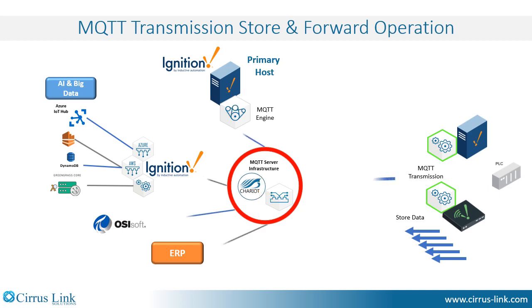Once communications to the primary host is restored, first the current live data is transmitted to restore a live view of the system, and then at a throttled rate the time-stamped stored data is published and flagged as historic. MQTT Engine knows to send this information directly to the data historian and backfill all missing data points.